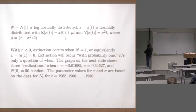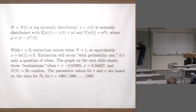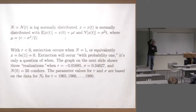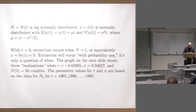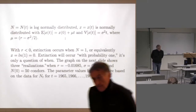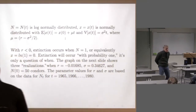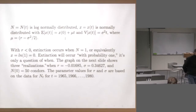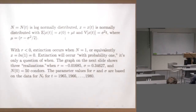A clarifying question: N(t) is log-normally distributed for every time slice t, and you're characterizing the expectation using the drift term — that's correct. If the intrinsic growth rate r is less than zero, extinction occurs when N equals 1, or equivalently when x equals 0. With a negative intrinsic growth rate, extinction will occur with probability 1 — it's only a question of when.